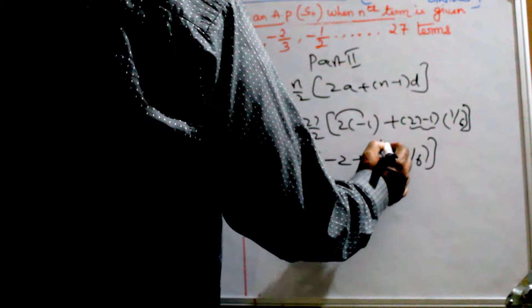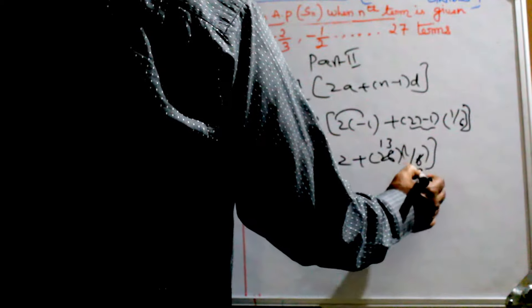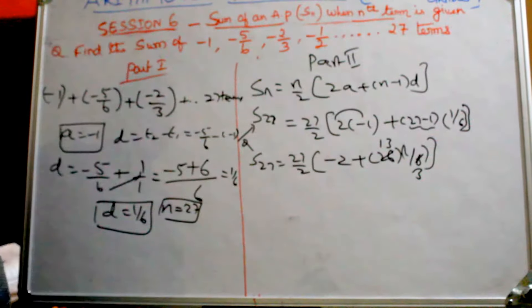2 goes into this 1 time, 3 times. 2 goes into this 3 times, 13/2. So you get 27/2 times (-2 + 13/3).